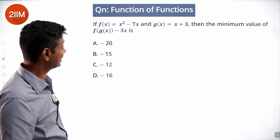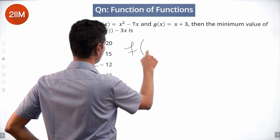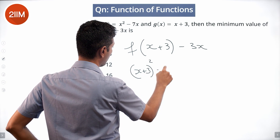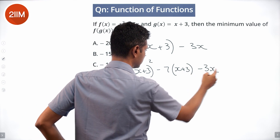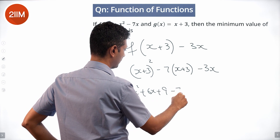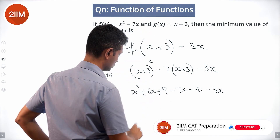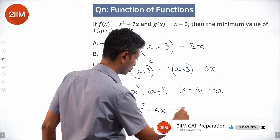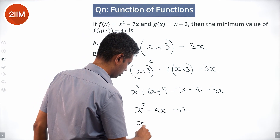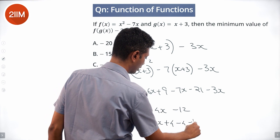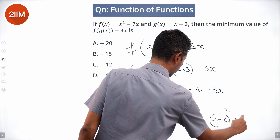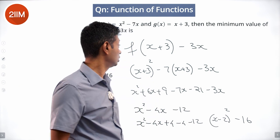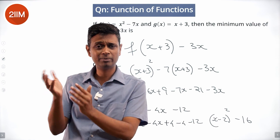f(x) = x² − 7x and g(x) = x + 3. Minimize f(g(x)) − 3x = f(x+3) − 3x = (x+3)² − 7(x+3) − 3x = x² + 6x + 9 − 7x − 21 − 3x = x² − 4x − 12 = (x−2)² − 16. Minimum value is −16, achieved when x = 2.